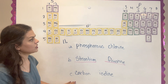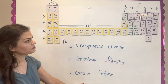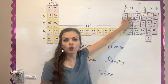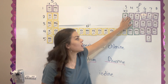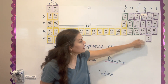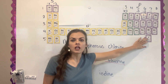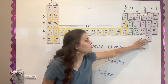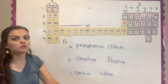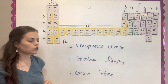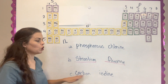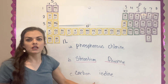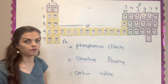With carbon and iodine, carbon is purple on the periodic table — it's a non-metal — and iodine is also purple and is a non-metal. Both of these are going to be taking electrons and nobody's wanting to give, so this is not going to be an ionic compound.